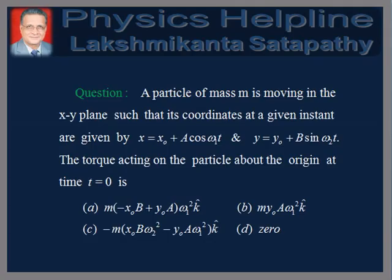A particle of mass M is moving in the XY plane such that its coordinates at a given instant are given by X equals X₀ plus A cos(ω₁t) and Y equals Y₀ plus B sin(ω₂t). The torque acting on the particle about the origin at time T equal to zero is?